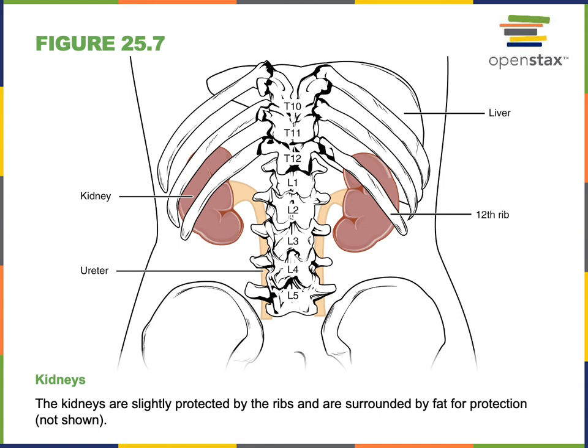Another function of the kidneys is to provide a long-term mechanism for regulating blood pressure by regulating blood volume. The kidneys also regulate the chemical composition of the blood — regulating the concentration of sodium and potassium, the composition of calcium, and the pH of the blood. While the respiratory system provides a more rapid mechanism to regulate blood pH, the kidneys can excrete hydrogen ions to help raise the pH as a long-term control mechanism.